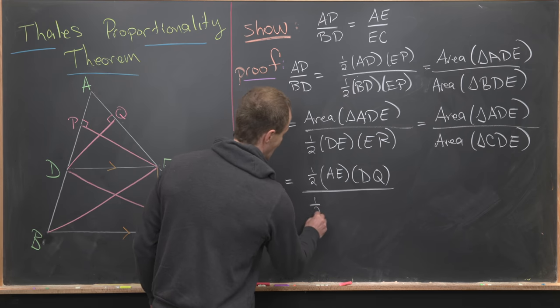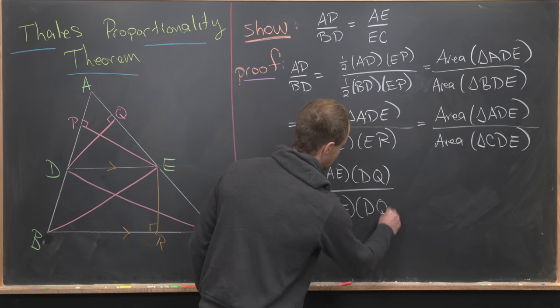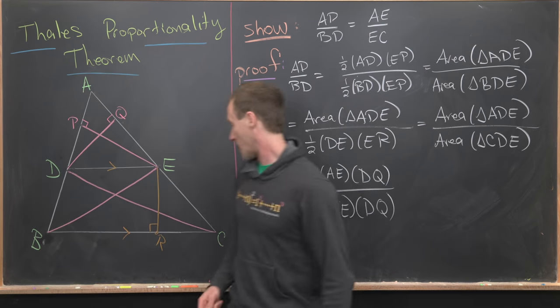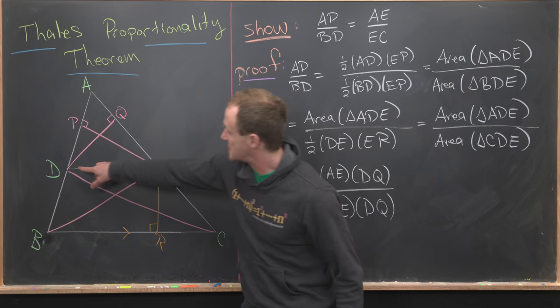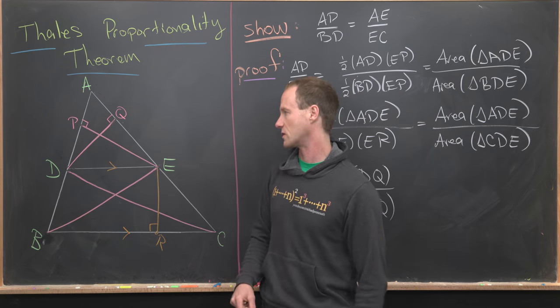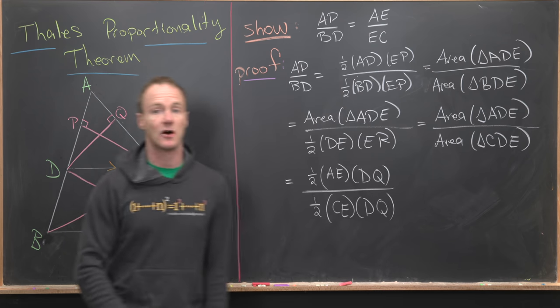And then in the denominator, we'll have one half CE DQ. We have CE and notice DQ will be an external altitude for this triangle CDE. So that also checks out.